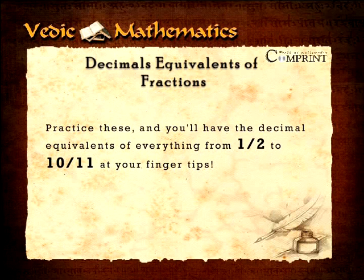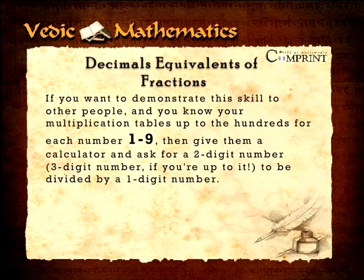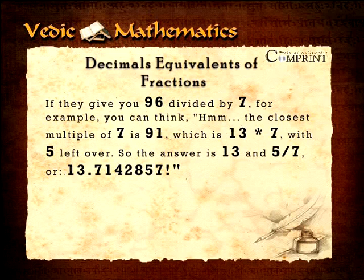You practice these, and you will have the decimal equivalence of everything from one by two to ten by eleven at your fingertips. If you want to demonstrate this skill to other people, and you know your multiplication tables up to the hundreds for each number from one to nine, then give them a calculator and ask for a two-digit or three-digit number to be divided by a one-digit number. If they give you ninety-six divided by seven, for instance, you can think: the closest multiple of seven is ninety-one, which is thirteen multiplied by seven, with five left over. So the answer is thirteen and five-sevenths, or 13.7142857.